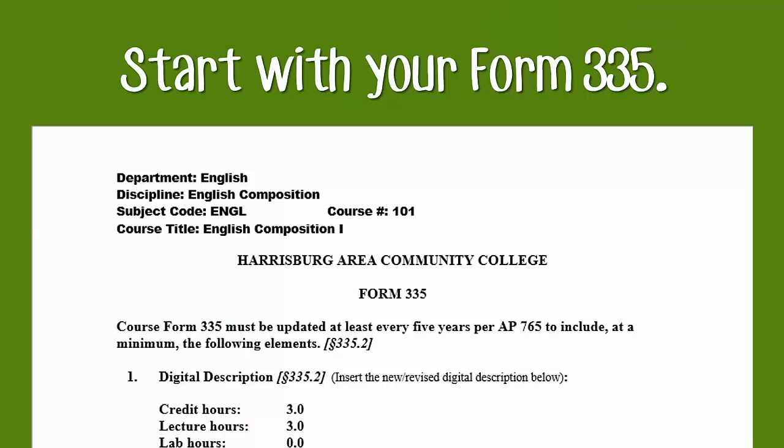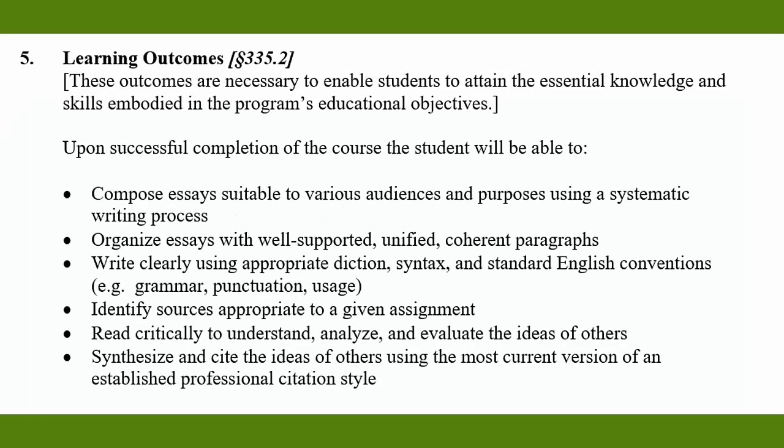You're going to start out by getting your Form 335. If you're not sure how to get that, reach out to your discipline lead. We're going to skim down that 335 to the section labeled Learning Outcomes. I just pulled an example one for English 101, and you can see that there are six learning outcomes here, and they're fairly broad. So because they're fairly broad, we're going to have to go through a process of breaking down these learning outcomes into measurable objectives.